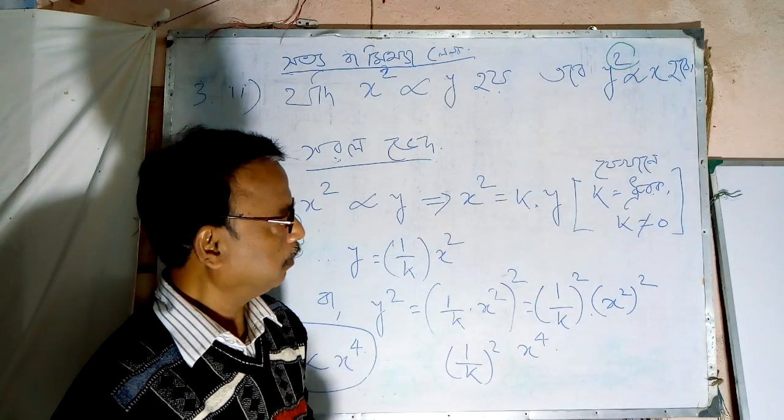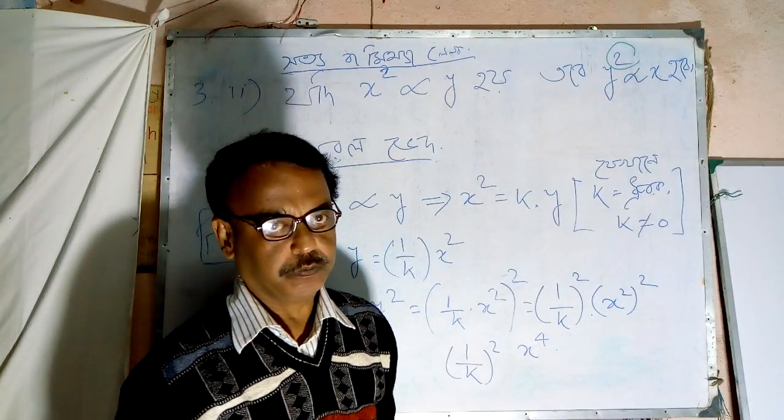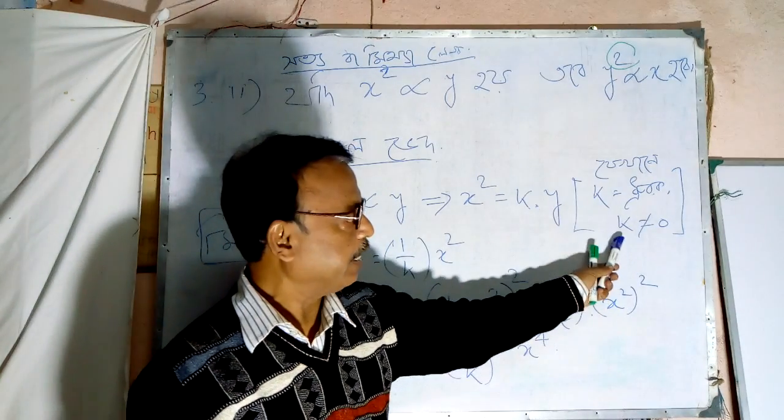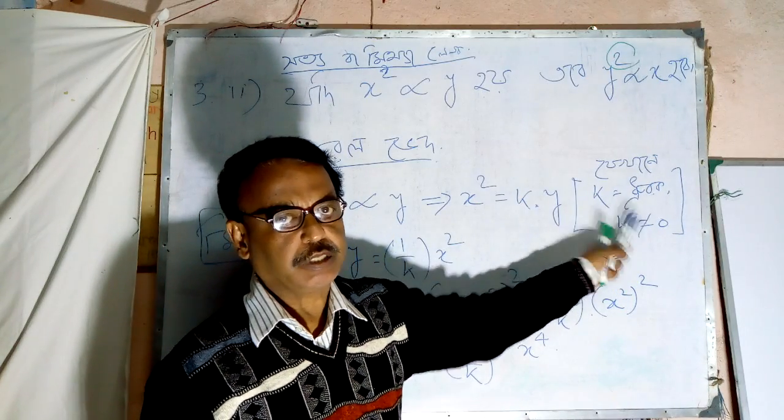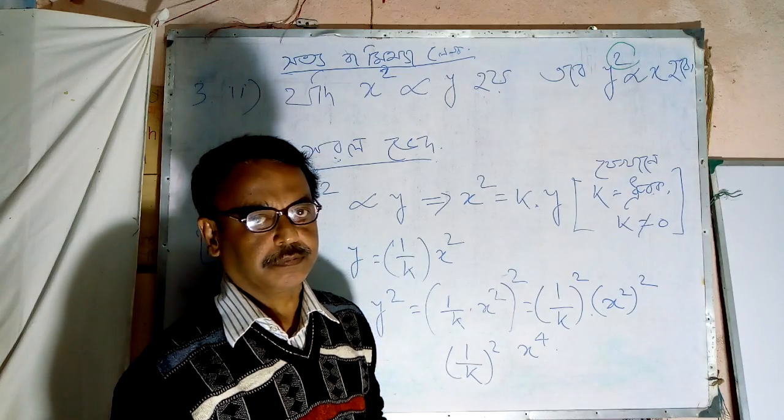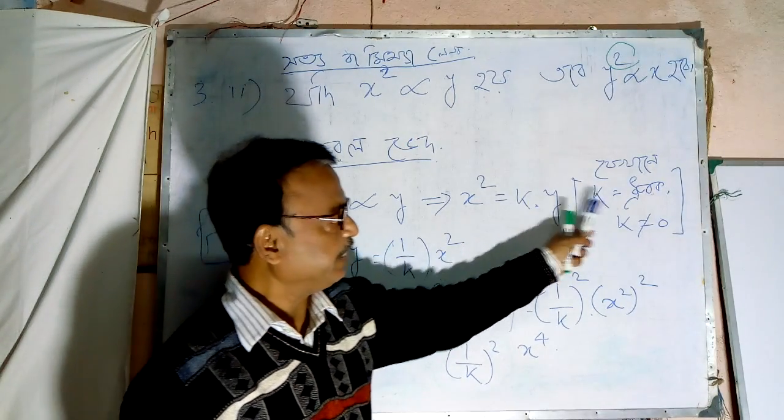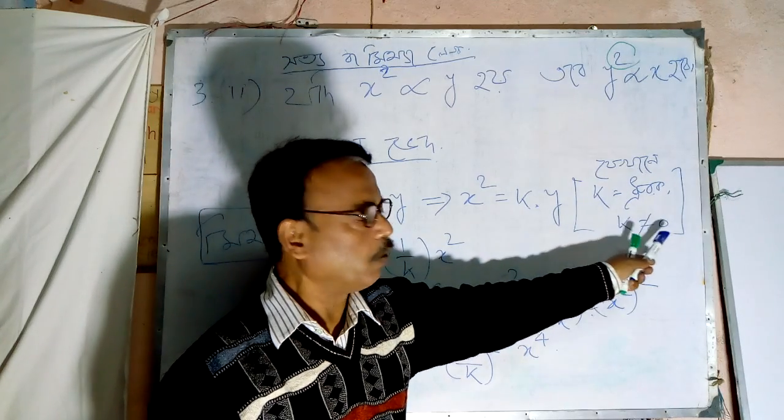What is the next thing? What is K? K is constant and K is not equal to 0. This is how to write it. If K is not equal to 0, K is not equal to 0.